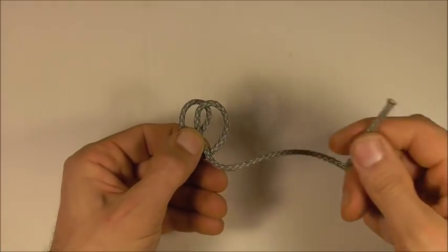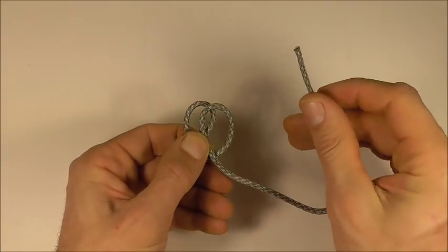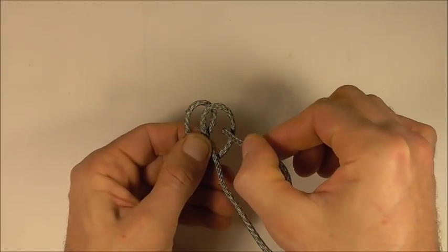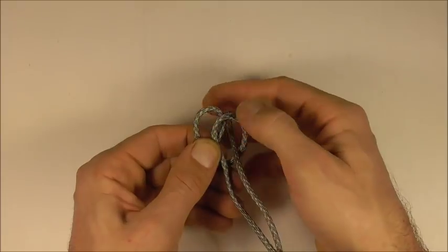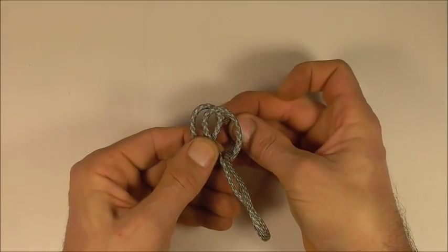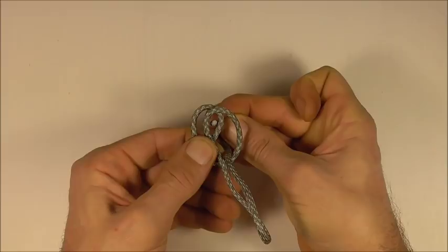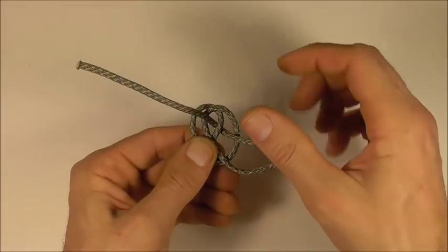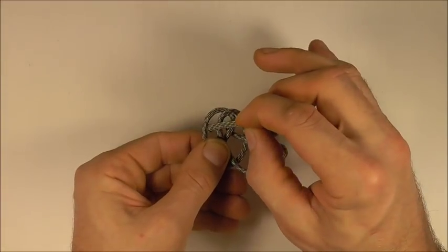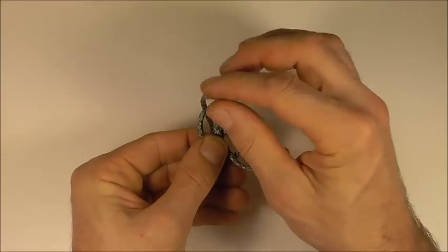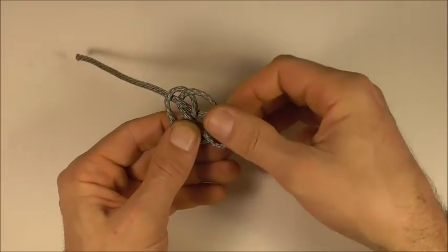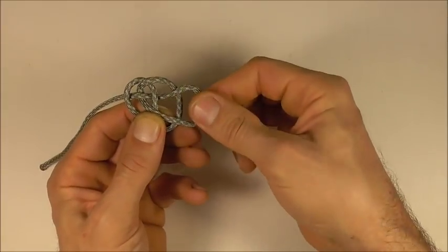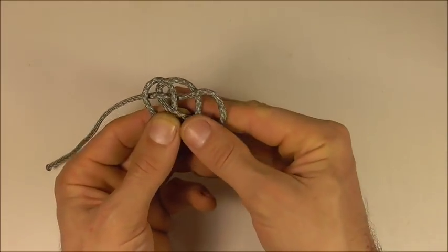Then cross that second loop over the top of the first loop. Grab your working end and we're going to weave through this knot. I'm going to go down through that first, then up through the center, and then down through the end loop. Just pull that through and that should make another loop here on the end.